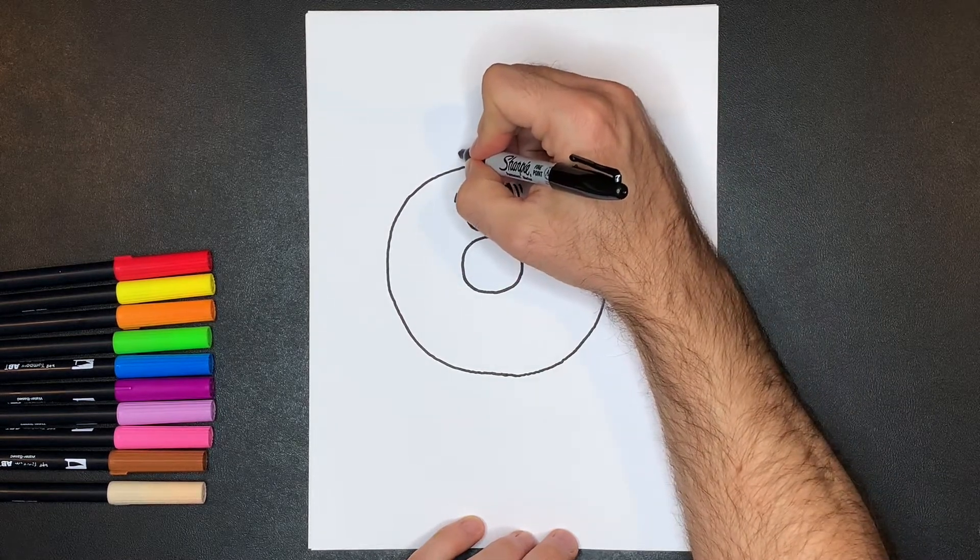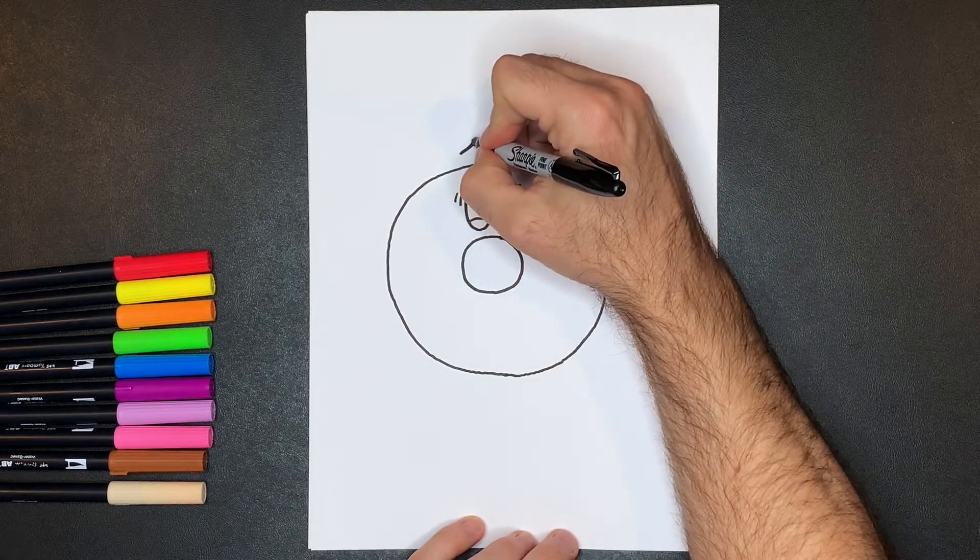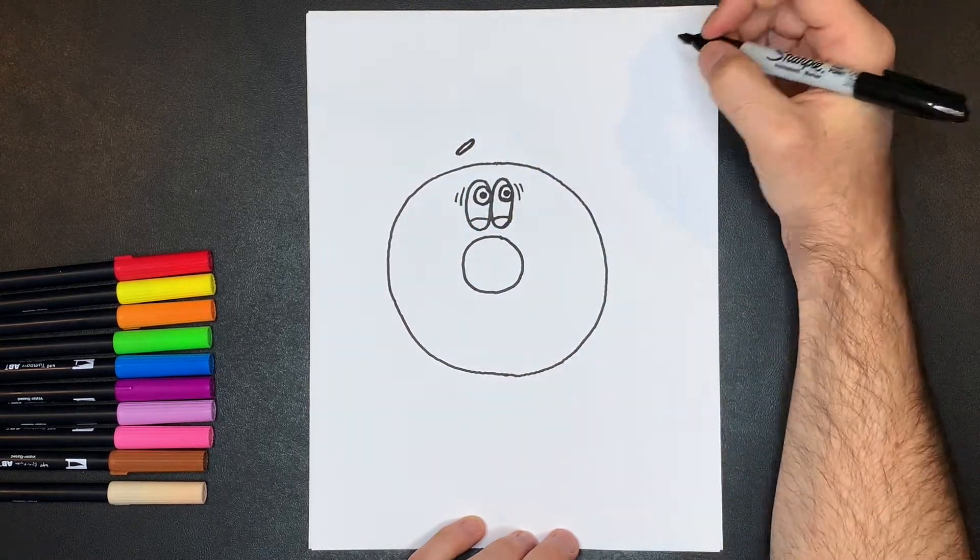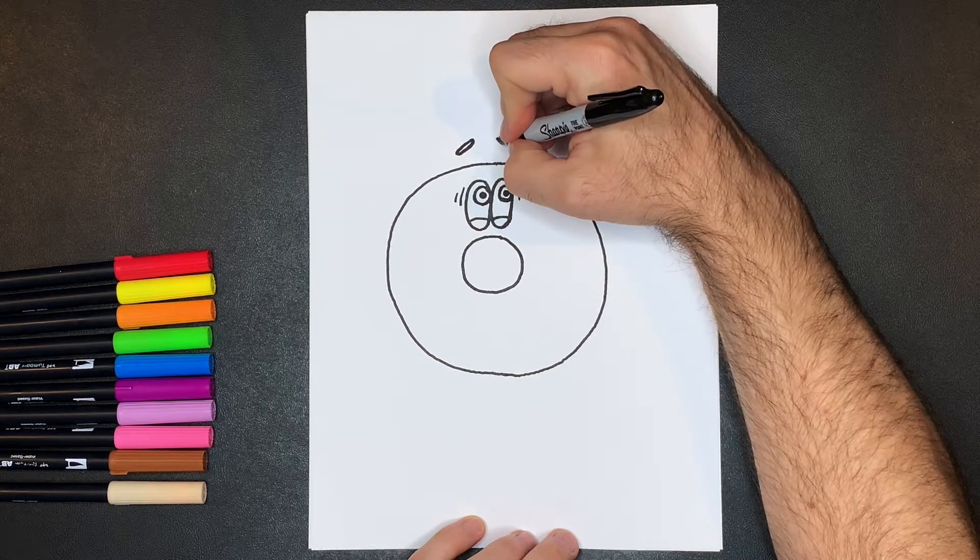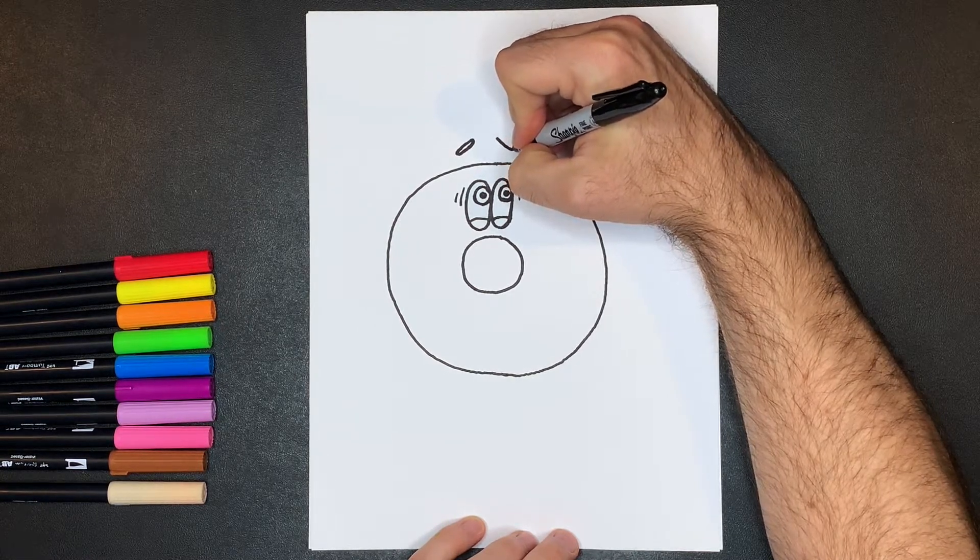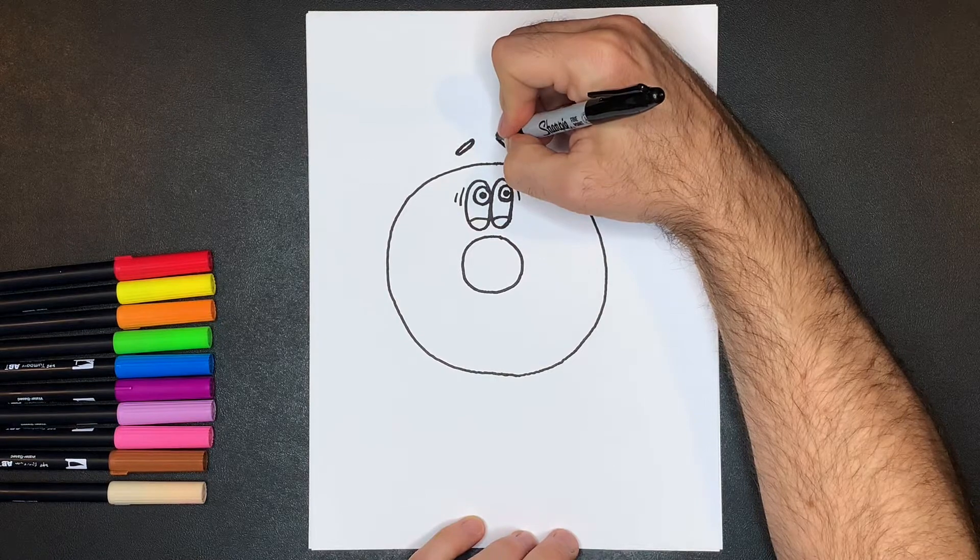So that starts right here, we're going to go up like this, out and around, and down like that. There's one eyebrow sprinkle, and then another one on this side, like that.